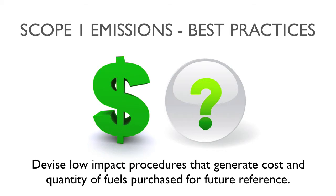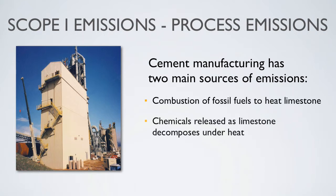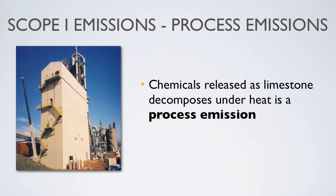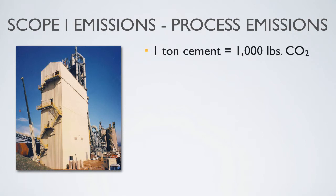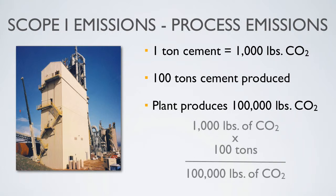Another source of Scope 1 emissions are process emissions. Cement manufacturing has two main sources of emissions: those from the combustion of fossil fuels used to heat up the limestone, and those that escape during chemical decomposition of the limestone as it is heated up. The latter is a process emission that can be quantified based on the amount of cement produced. For example, if every ton of cement results in 1,000 pounds of carbon dioxide and your plant produces 100 tons of cement each year, then the plant's process emissions account for 100,000 pounds of carbon dioxide annually. The same holds true for many other sources of process emissions, where emissions are frequently proportional to the amount of product produced.